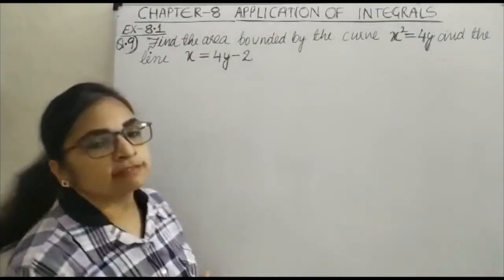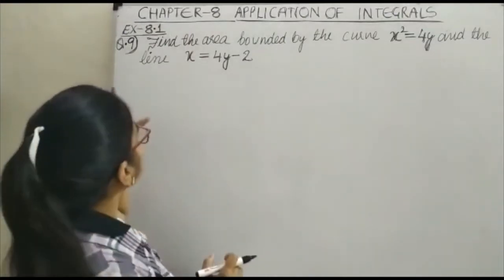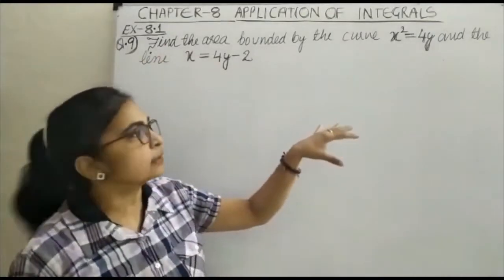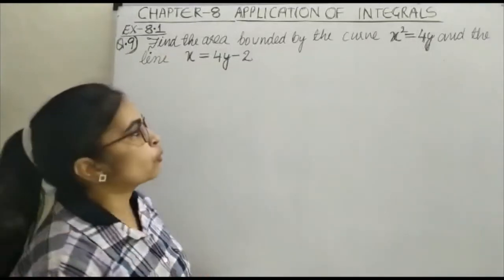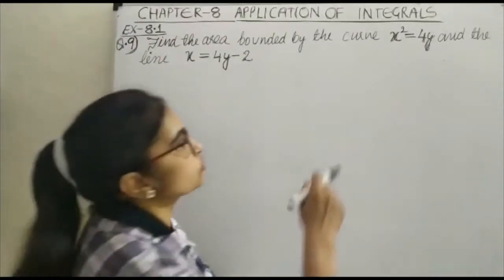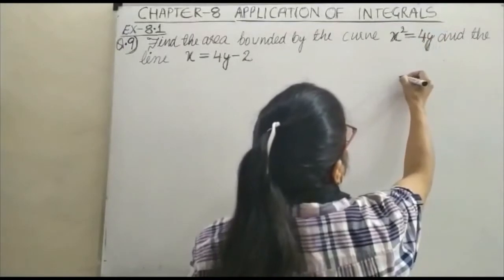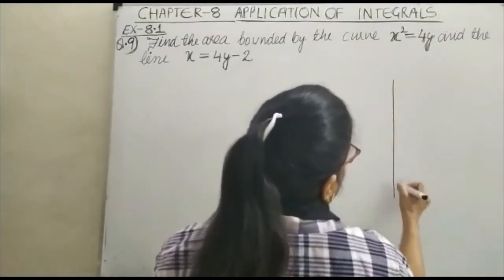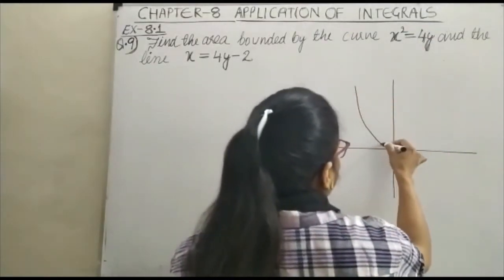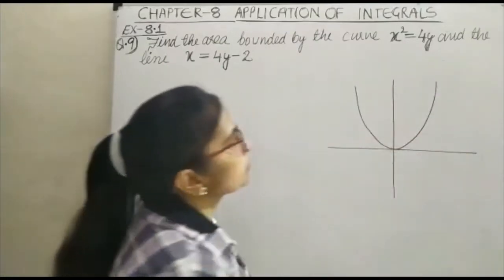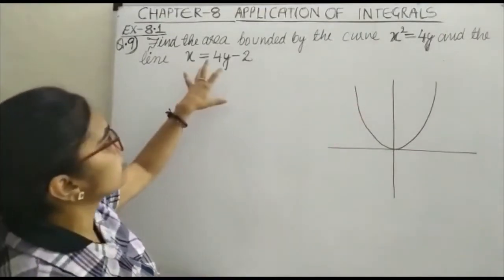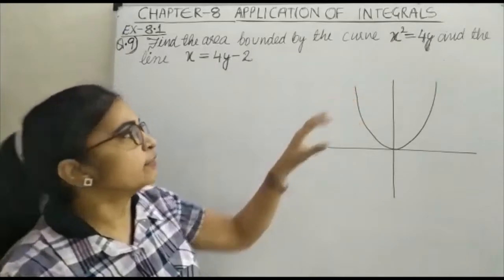Welcome to Chapter 8, Exercise 8.1, question number 9. We need to find the area bounded by the curve x² = 4y and the line x = 4y - 2. We know that x² = 4y is an upward parabola passing through the origin. Now we will find the point of intersection of the line x = 4y - 2 and the given curve.